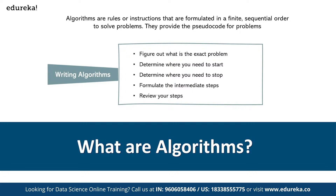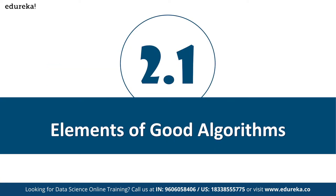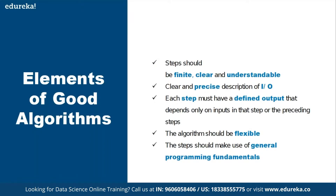Before you write any algorithm — sometimes called pseudo code — you need to keep certain things in mind: first, what is the exact problem; second, where to start; third, where to stop; fourth, any decision-making or looping statements need to be included; fifth, any intermediate steps; and finally, review what you're writing. A good algorithm is one that is clearly written in an understandable fashion and is finite — it should have a defined set of steps, not an infinite number.